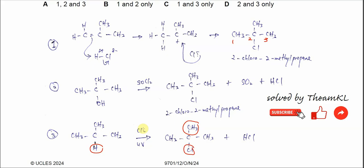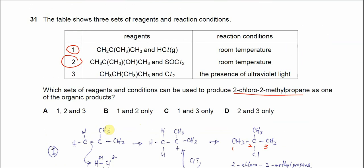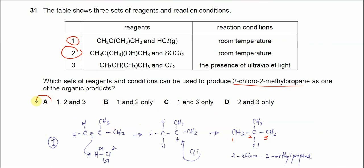So all three sets are able to form 2-chloro-2-methylpropane. The answer is A then. That's all, thank you.